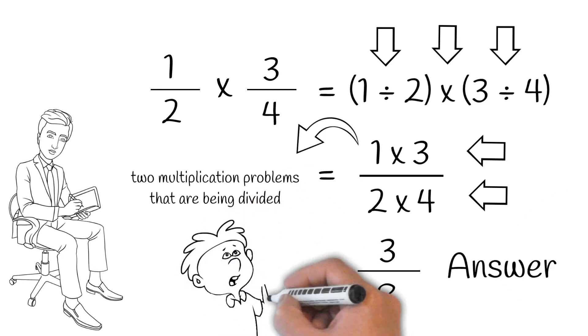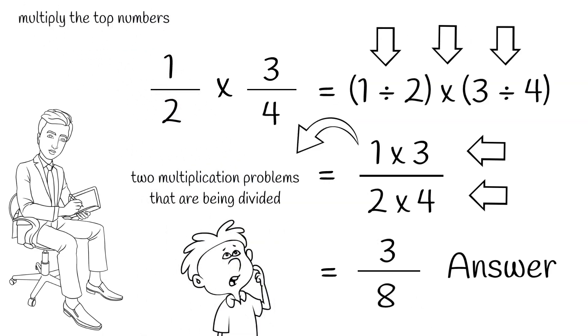So, what does this all mean? Well, it means that to multiply fractions, all you have to do is multiply the top numbers and then multiply the bottom numbers, and there's your answer.